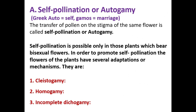Self-pollination or autogamy is a Greek word — auto means self, gamus means marriage — meaning they get married within themselves. Transfer of pollen to the stigma of the same flower is called self-pollination or autogamy. Self-pollination is possible only in plants bearing bisexual flowers. To promote self-pollination, flowers have three types of adaptations: cleistogamy, homogamy, and incomplete dichogamy.